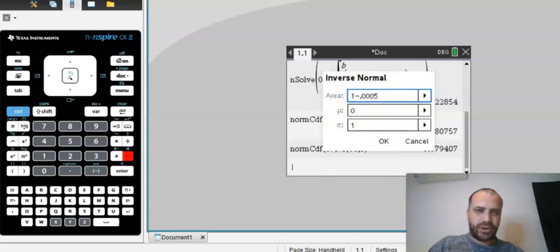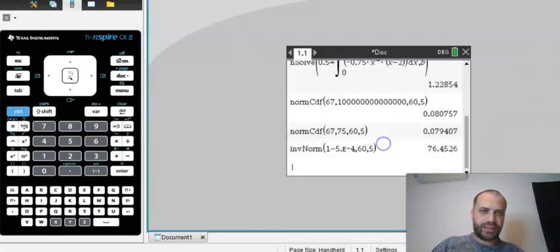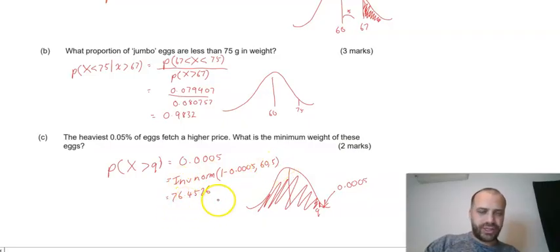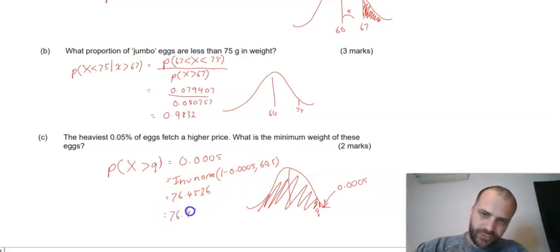So back we go, and we can do this directly in here. We can go 1 minus 0.0005, and we've got 60, and we've got 5. We can calculate that, and we get 76.4526. So I've shown what I've done on my calculator, written this in, probably too many decimals, let's be real, 76.45. What is the minimum weight of these eggs? 76.45 grams.